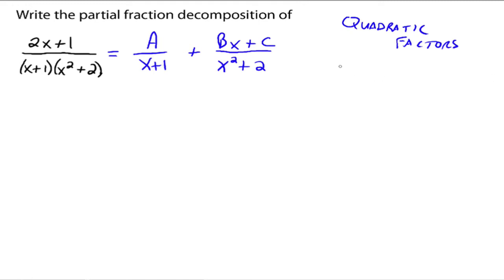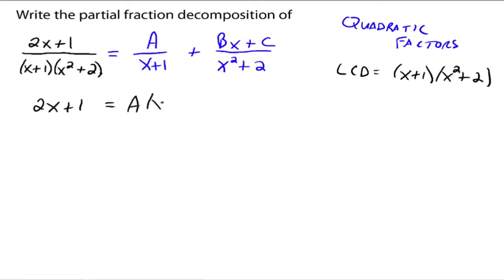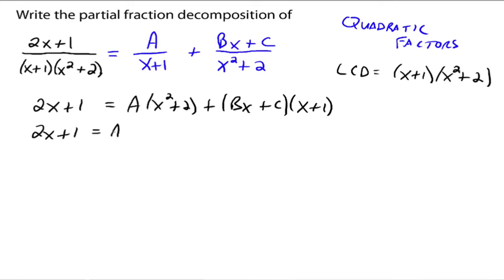The LCD is x plus one times x squared plus two. Multiply both sides by that: you get 2x plus one on the left, and A times x squared plus two, plus Bx plus C times x plus one on the right. Multiplying the LCD by each fraction cancels the respective denominator. Then you have: 2x plus one equals Ax squared plus 2A, and then we FOIL out to get Bx squared plus Bx plus Cx plus C.